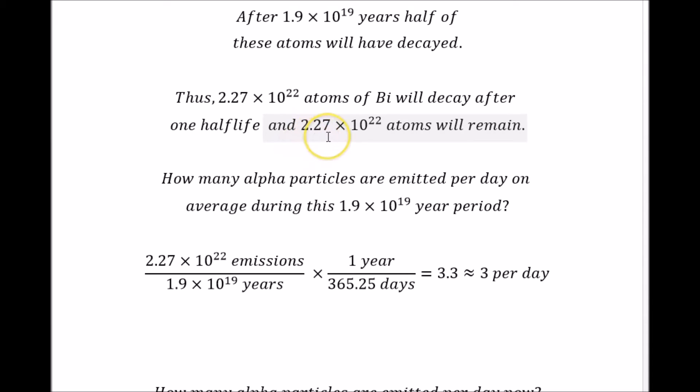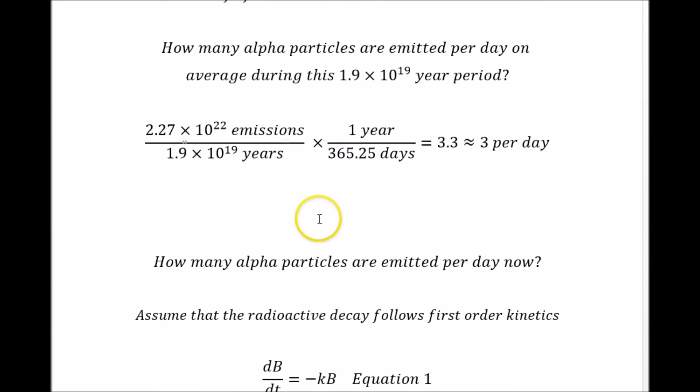How many alpha particles are emitted per day on average during this 1.9 times 10 to the 19 year period? We have 2.27 times 10 to the 22 emissions over 1.9 times 10 to the 19 years. That's the number of emissions per year on average. Divide by the number of days in a year, and we get 3.3 emissions per day on average.